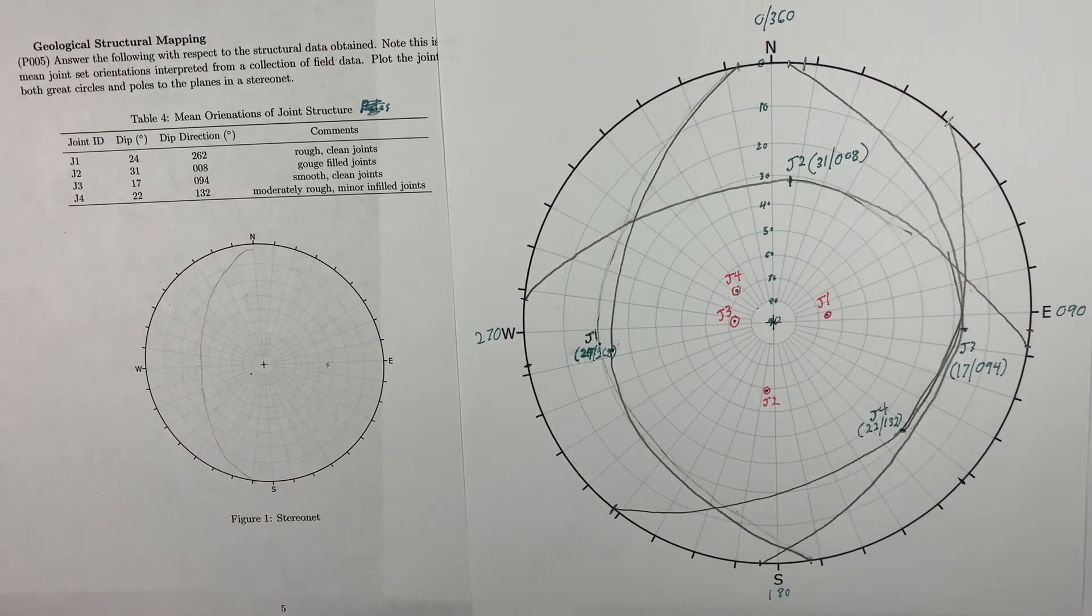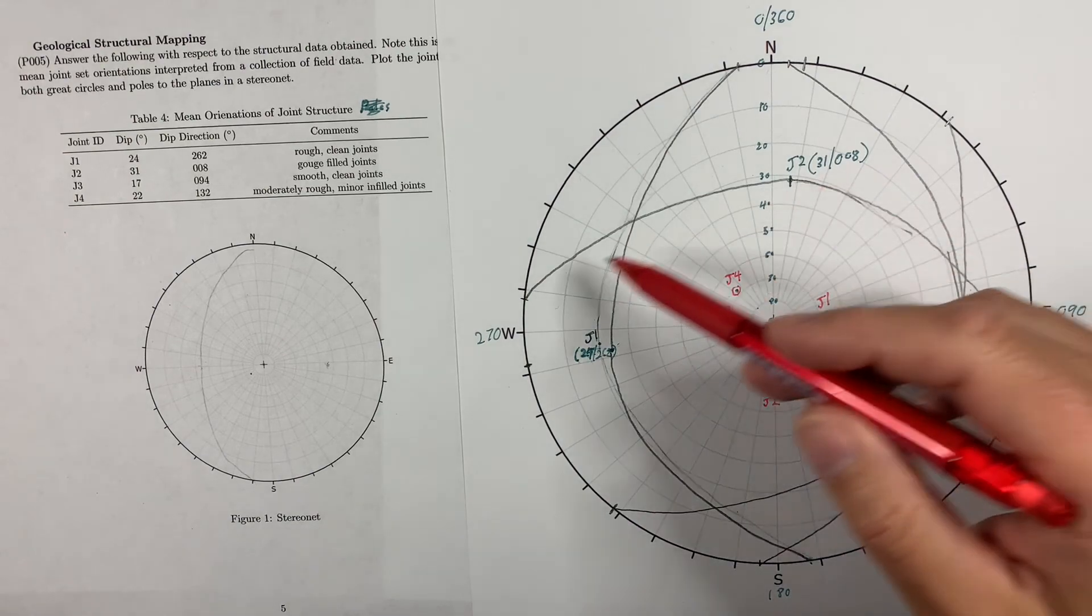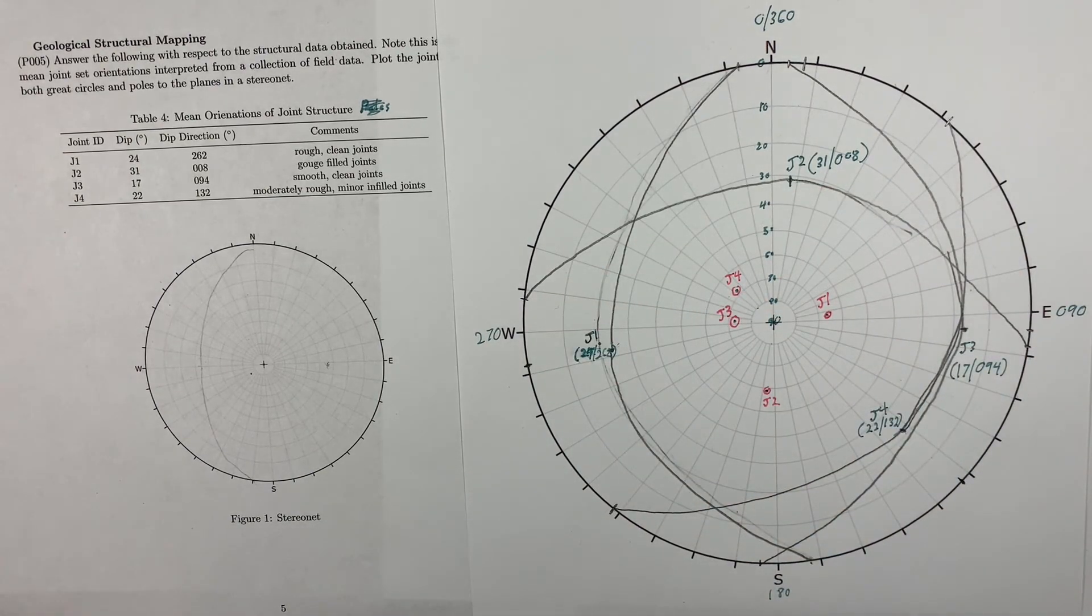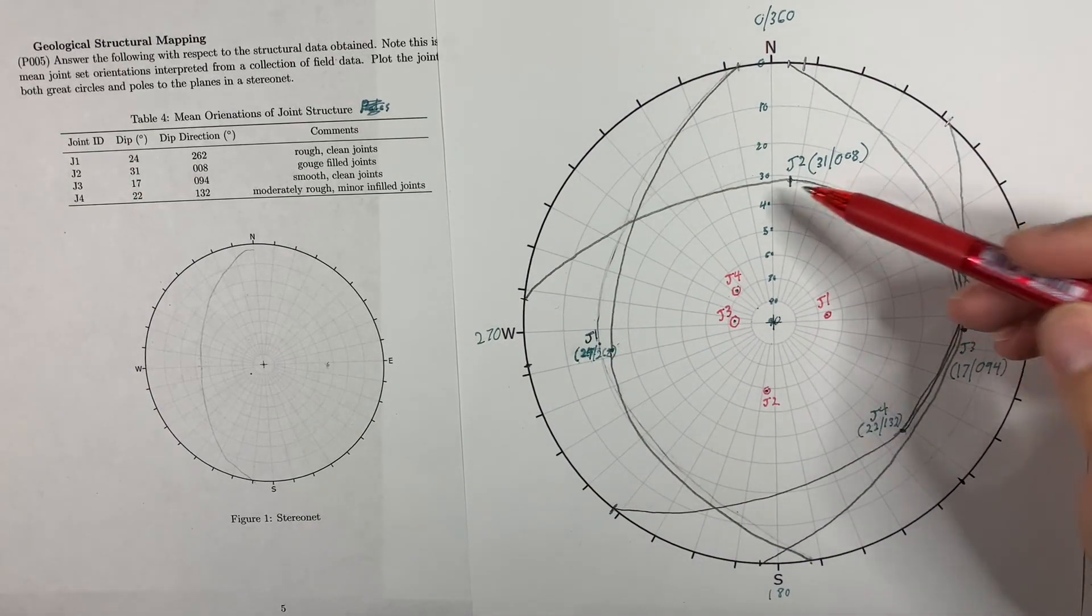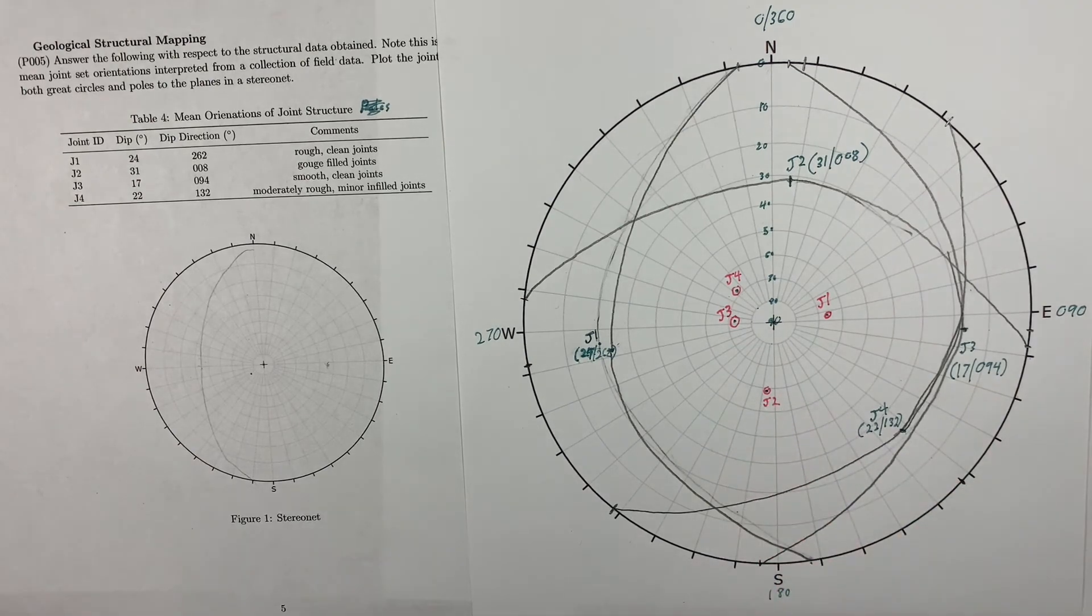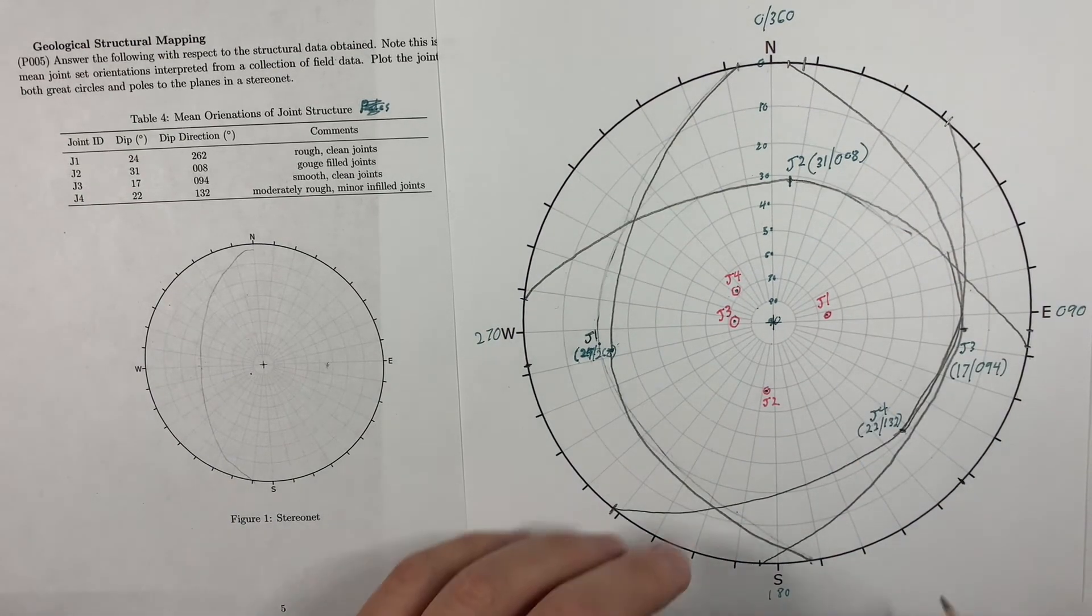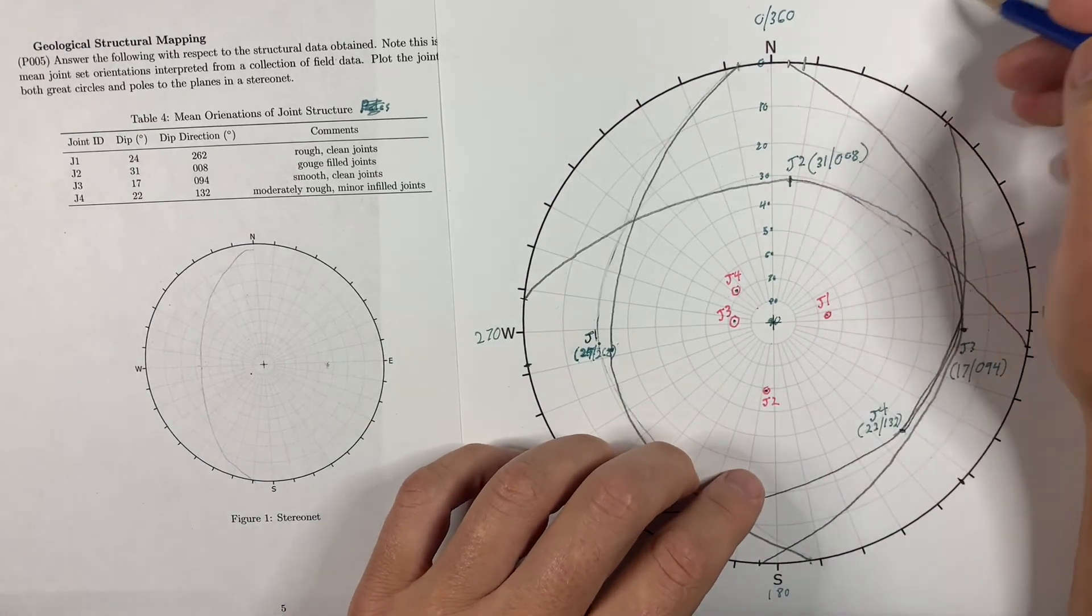Again, just a reminder, the computer draws certainly much prettier structures and great circles than this. But really I want you to be able to understand how to plot them. You get your great circles here at the apex points, and you know how to draw where they intersect the outside. And you know how to go and get the pole. You go 180 degrees around to get the direction of the pole, and the dip is basically 90 degrees difference.